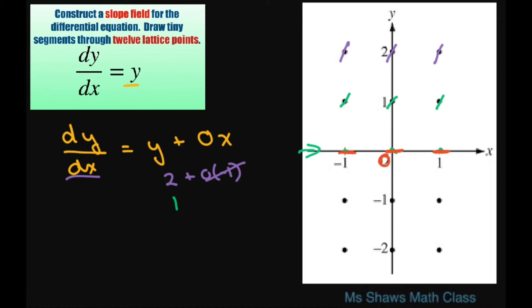Negative 1, the slope is going to be negative 1. And at negative 2, the slope is going to be a little steeper but negative. And that's all you're doing. You're just plotting in your y.